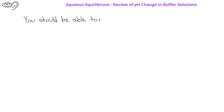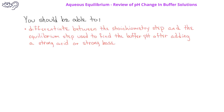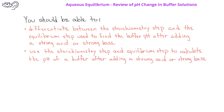After watching this video, you should be able to differentiate between the stoichiometry step and the equilibrium step used to find the new pH after adding a strong acid or strong base to a buffer solution. You should also be able to use the stoichiometry step combined with the equilibrium step to calculate the pH of a buffer after addition of a strong acid or a strong base.